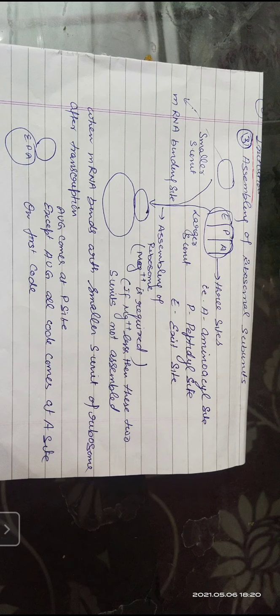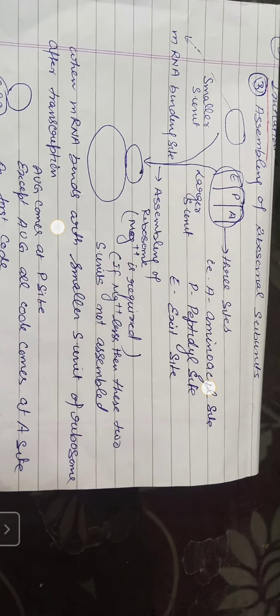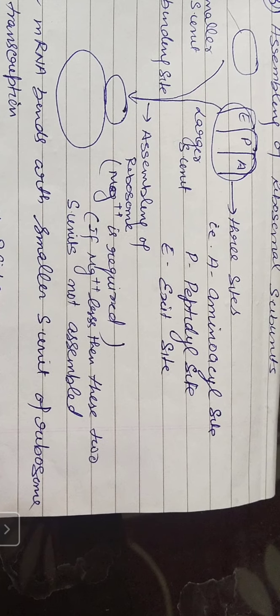The larger subunit also contains binding sites. There are three sites: the A site, the P site, and the E site. The A site is called the aminoacyl site, which holds the tRNA carrying amino acids on its three-prime end.